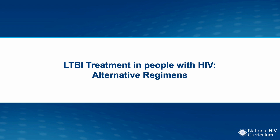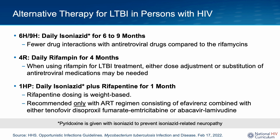Now let's discuss alternative LTBI treatment regimens mentioned in the OI guidelines. The six to nine months of isoniazid, which used to be a preferred regimen, is no longer considered preferred and is now listed as an alternative. Its biggest advantage was very few drug interactions with current antiretroviral regimens. Other alternative regimens include four months of daily rifampin (4R), or one month of daily isoniazid plus rifapentine (1HP). Both rifampin and rifapentine have several drug interactions with antiretrovirals, which must be taken into account when pairing HIV treatment with LTBI treatment.